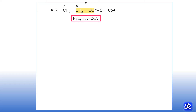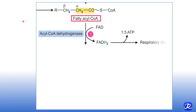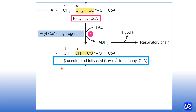In beta oxidation in the mitochondria, the substrate is fatty acyl-CoA with an alpha carbon and a beta carbon. The first step is dehydrogenation by the enzyme acyl-CoA dehydrogenase. FAD is reduced to FADH2, which when entering the electron transport chain yields 1.5 ATP. The fatty acyl-CoA is dehydrogenated to form alpha-beta unsaturated fatty acyl-CoA, also called Δ2-trans-enoyl-CoA, with a double bond formed between the alpha and beta carbon atoms by removal of two hydride ions.